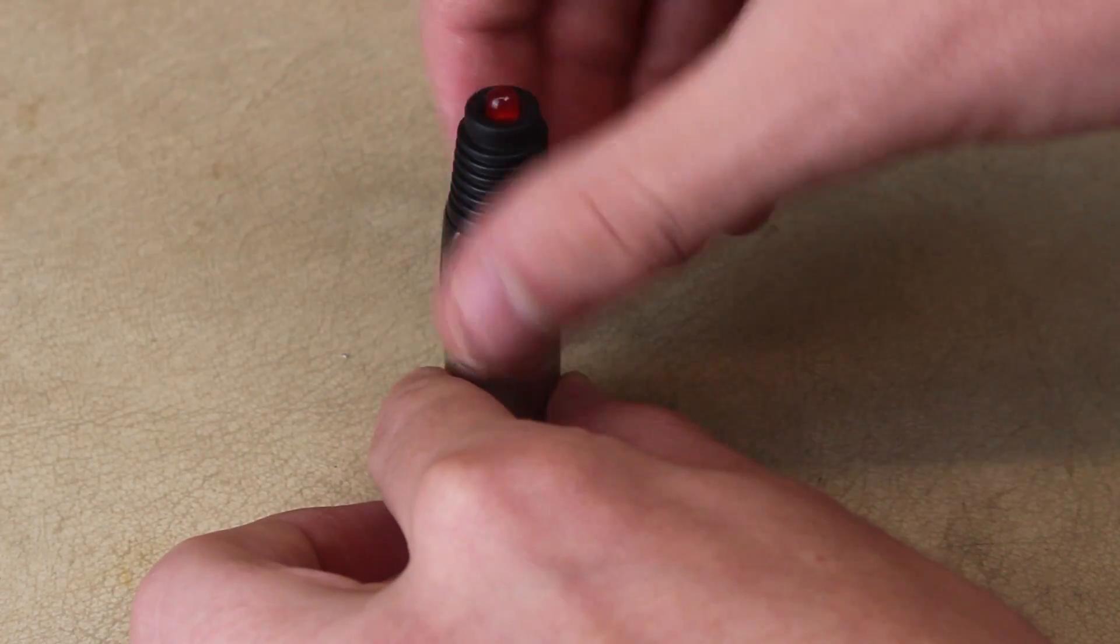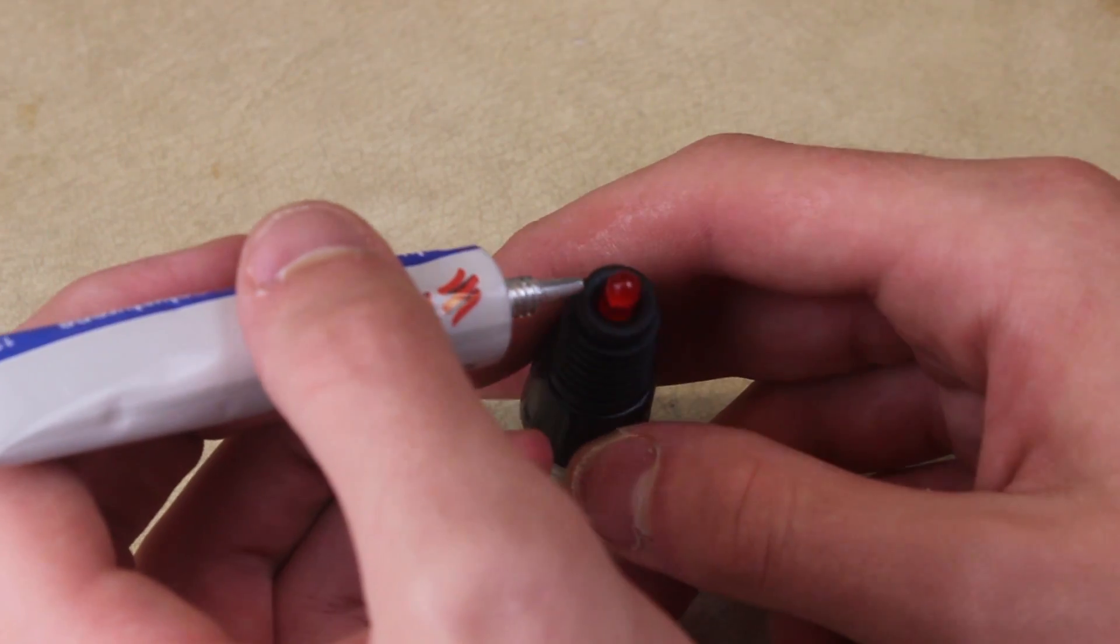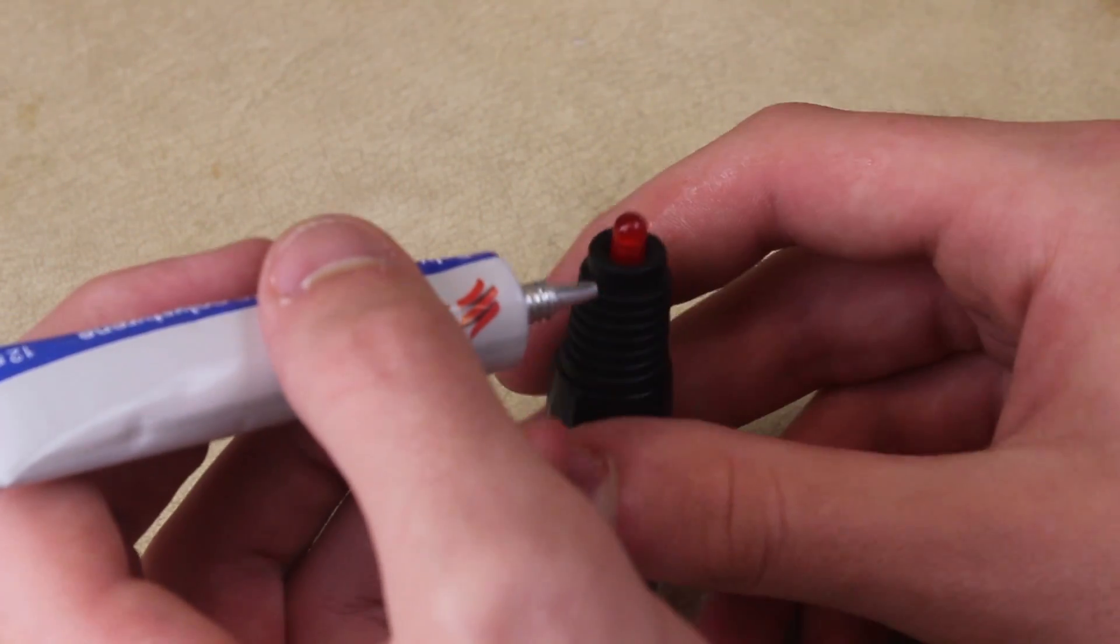Once that's all soldered, we can put it all back together. If you want to, you can add some super glue or hot glue to hold the LED in place.